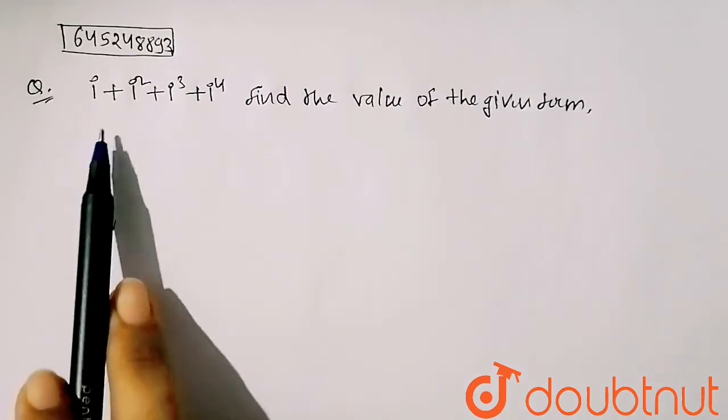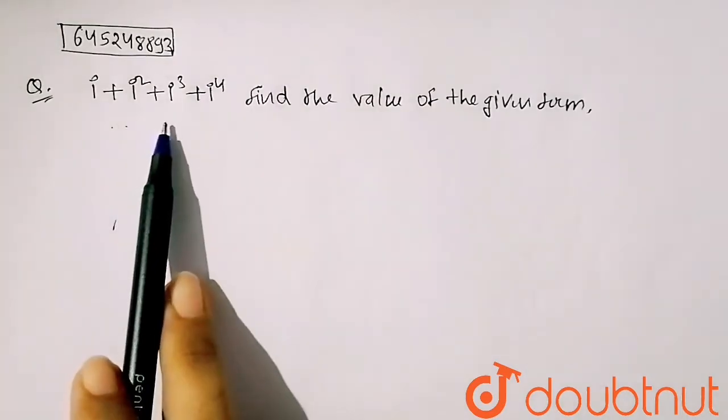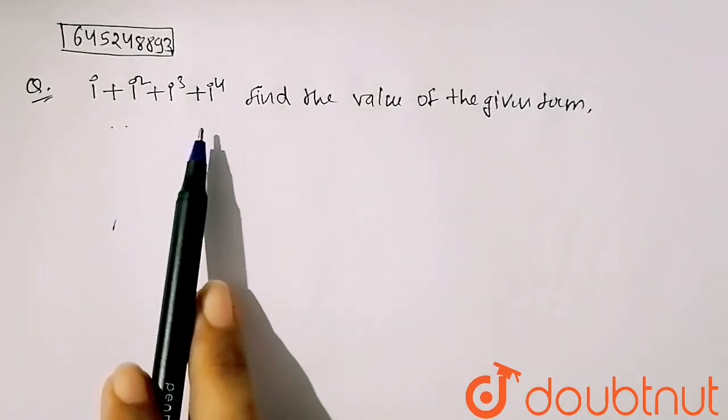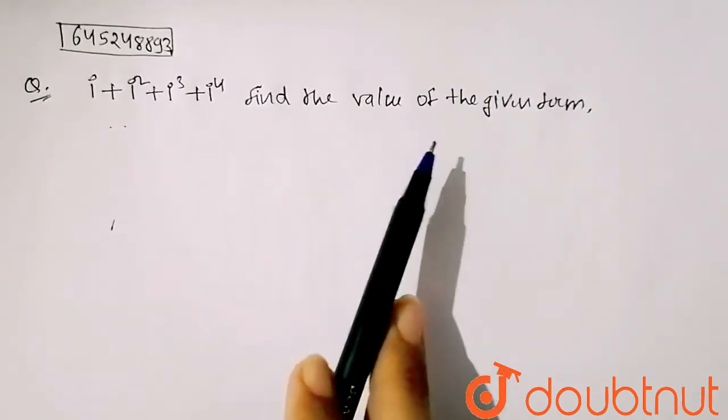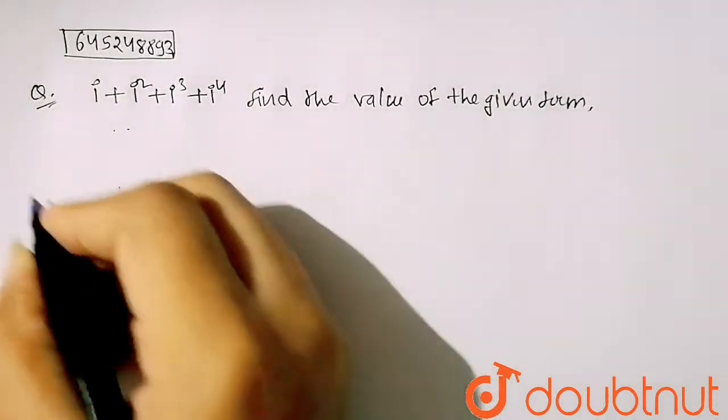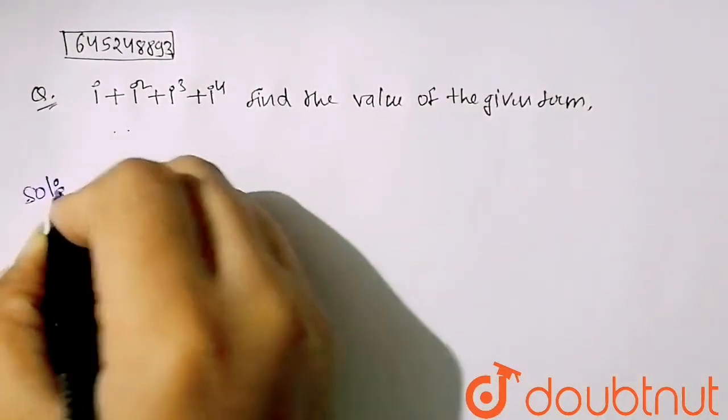It is given that iota plus iota square plus iota cube plus iota to the power 4, find the value of the given term. So this is my given term and I have to find its value.